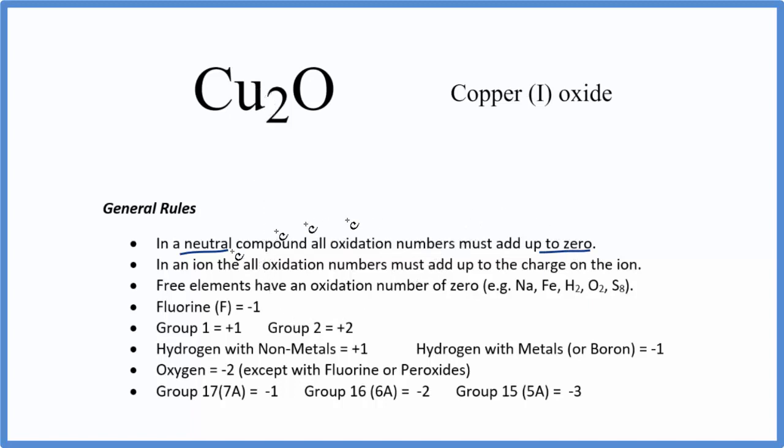We don't see copper in our rules. Copper is a transition metal. It can have different oxidation states. But we do see that oxygen here, oxygen is going to be minus 2, except when it's bonded to fluorine or in peroxides. So we know that the oxygen is minus 2.